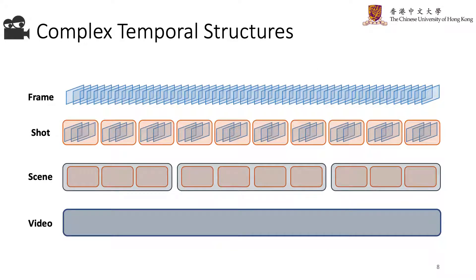Movie contains a hierarchical temporal structure, which is different from the common videos we studied before. Let's start from the most basic unit of a movie: the shot. A shot is an unbroken sequence of frames recorded from the same camera.